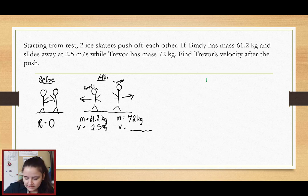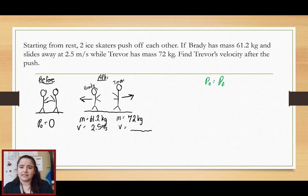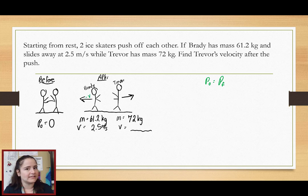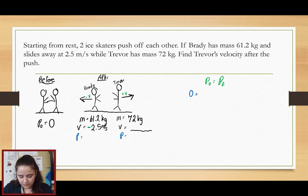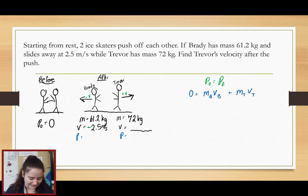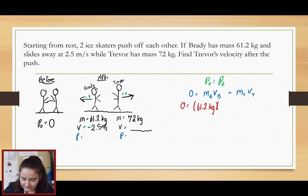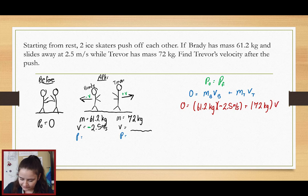We know this is still a conservation problem, so our initial momentum will equal our final momentum — we use ice to say there's no friction. But they are going in different directions, so I'm going to set left as negative. Brady will have a negative velocity after they push off of each other, while Trevor's will be positive, so I'm going to make Brady's velocity negative 2.5. We know our initial momentum is zero, but these guys will both have momentum after the collision. So we'll have the mass of Brady times the velocity of Brady, plus the mass of Trevor times the velocity of Trevor.